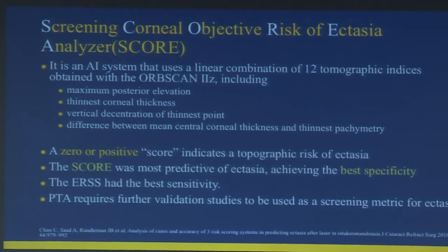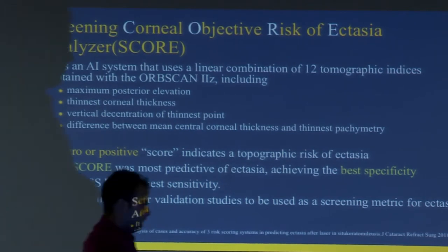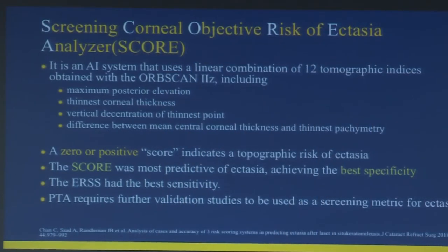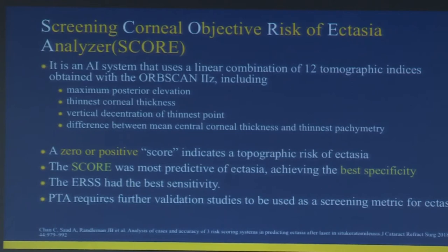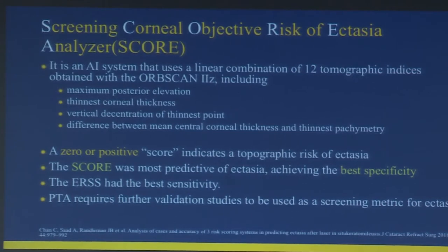The SCORE (Screening Corneal Objective Risk of Ectasia) analyzer was evaluated by Cordelia Chan from Singapore National Eye Center in a multicentric trial. SCORE was compared with the Ectasia Risk Scoring System (ERSS) and Percentage of Tissue Ablation (PTA). The best specificity for predicting ectasia risk was SCORE, ERSS had the best sensitivity, while PTA required more validation studies.